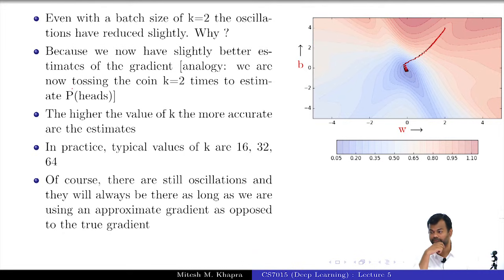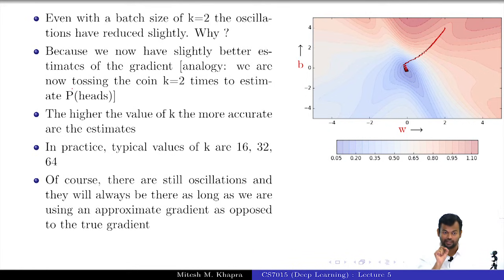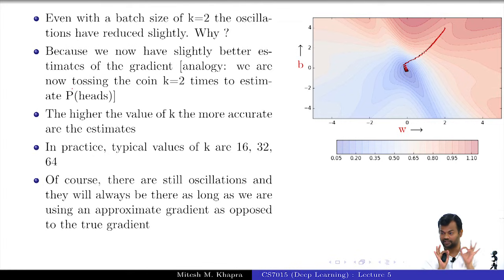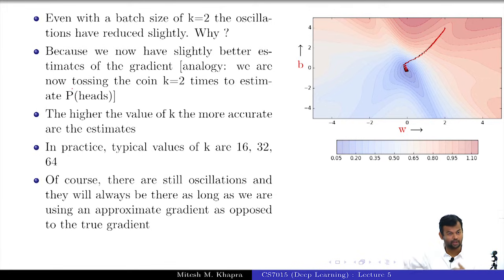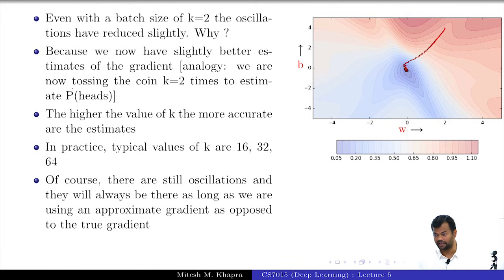What do you see about the red curve? It is completely contained inside the black curve — its oscillations are smaller than the black curve. This makes sense because now you are not listening to just one point but two points, so you are doing something better. The analogy with the coin toss: you are tossing the coin twice and then deciding the probability of heads, which is always going to be slightly better than tossing it only once. In the limit, if you keep increasing this, you end up with batch gradient descent. Looking at only one data point is bad because it is very noisy; looking at the entire data is bad because it is very time consuming. Mini-batch gradient descent is the middle ground.